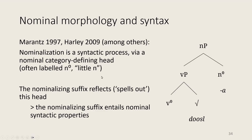In non-lexicalist frameworks — such as distributed morphology — the view is that nominalization is a syntactic process. A nominalized verb is formed by merging a root or verbal structure with a nominal category-defining head, commonly labeled 'n.' So if you see a nominalizing suffix in the morphology, that indicates this nominal head is present in the syntax — the suffix spells out the head. The implication is that if you see a nominalizing suffix, that also entails the word should have nominal syntactic properties, because morphology reflects the syntax.